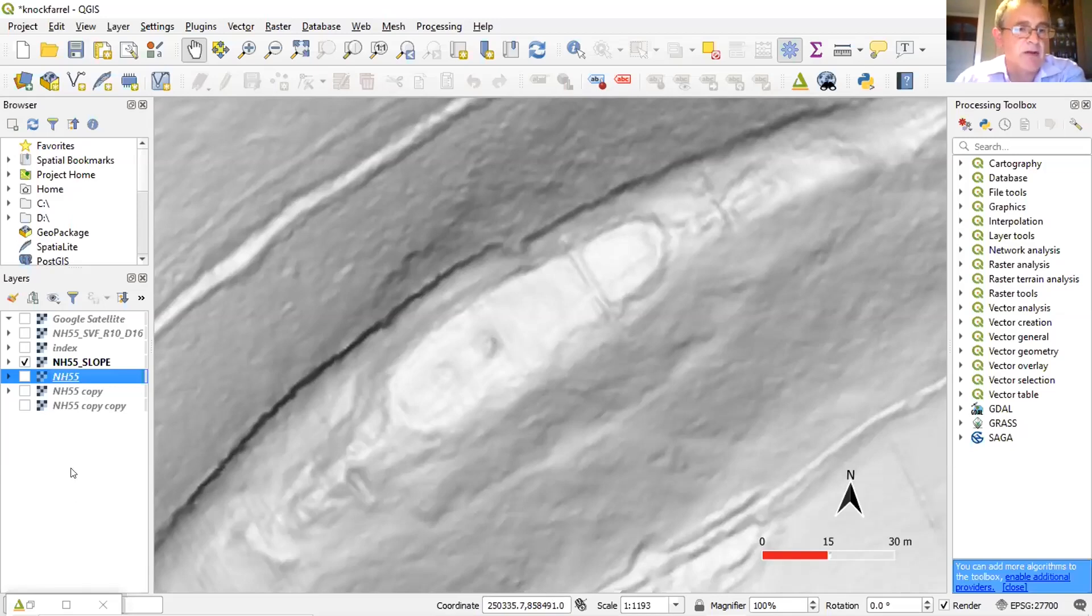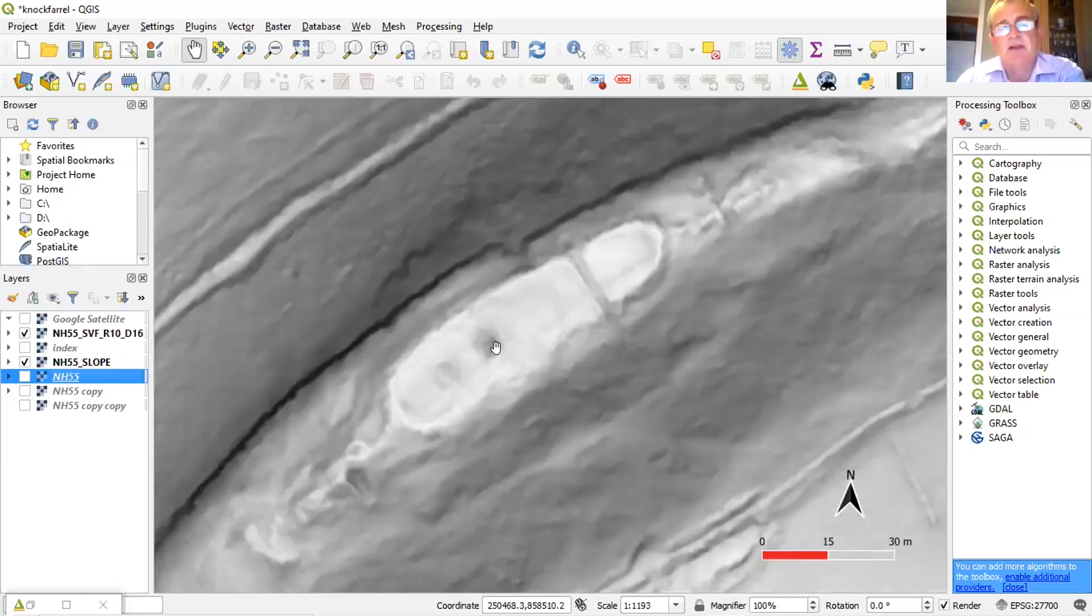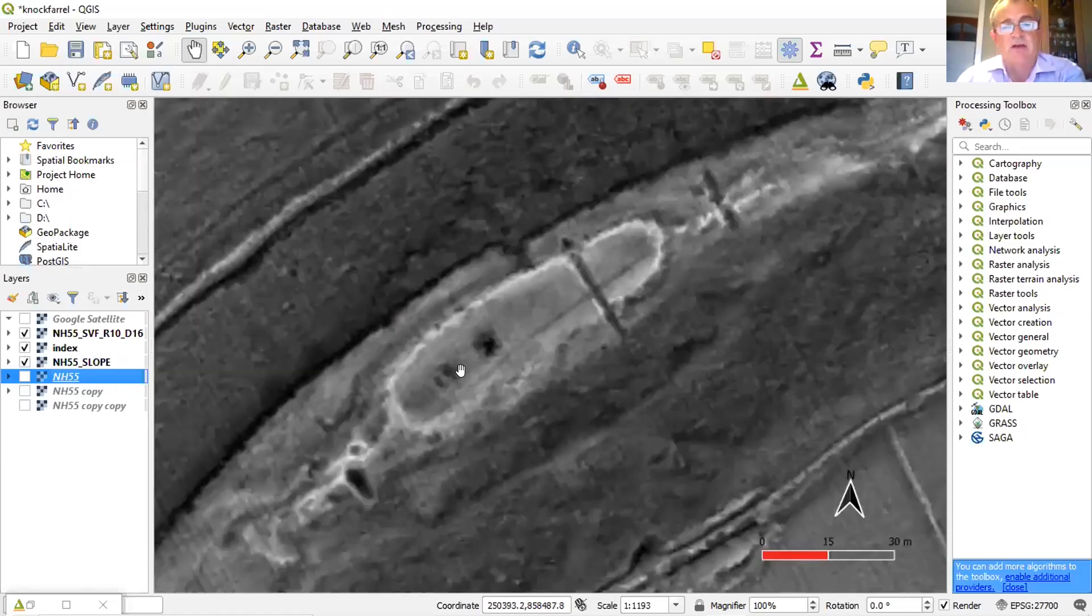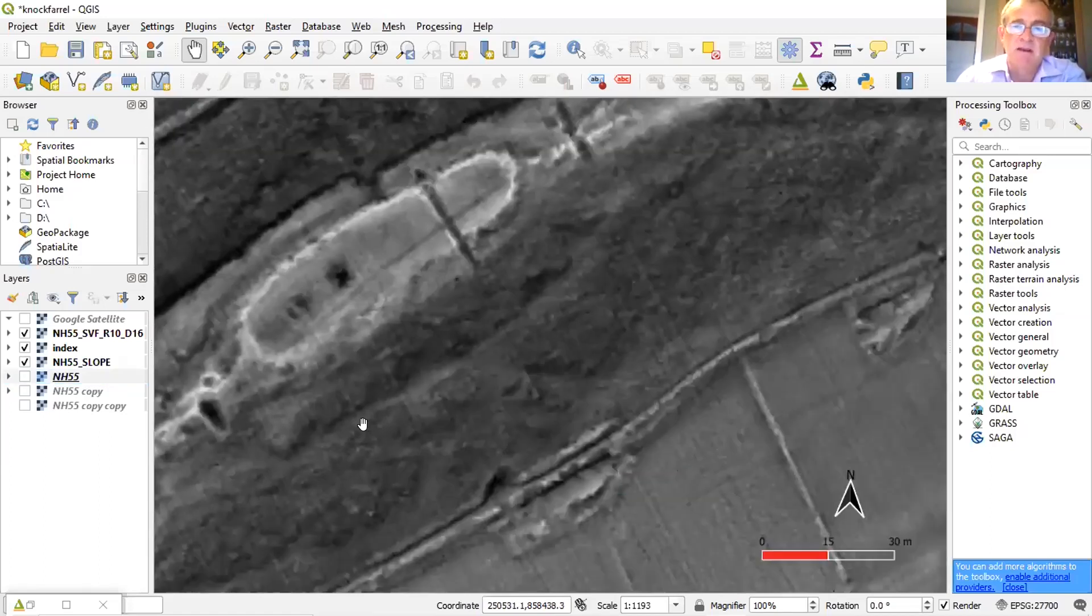But then you can start adding more different processing on top of that to highlight other features and try and lift them out. So this is with what's called sky view factor. So this is really showing how open or closed an area or a feature is. So we're beginning to bring out some of the features here. Can you see my little hand waving around? If you look at particularly the depression here, it's now beginning to show. And then further processing really now is beginning to lift out the ramparts, the excavated trenches and so on. So this is really what I was playing with.